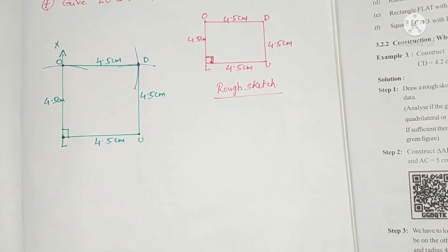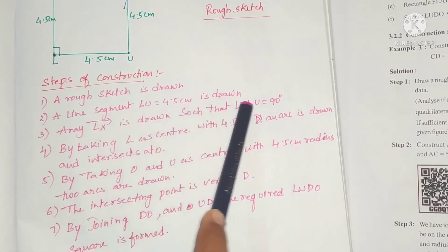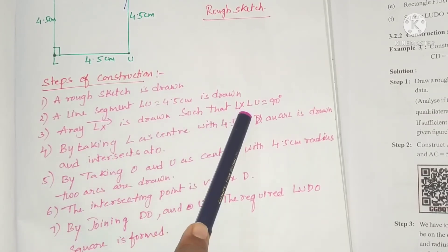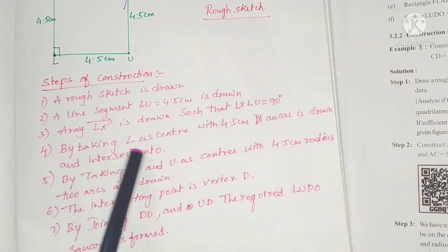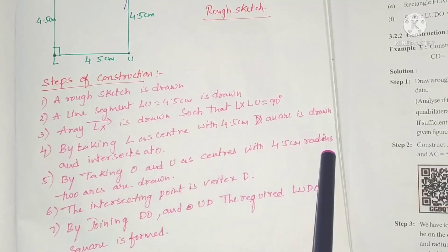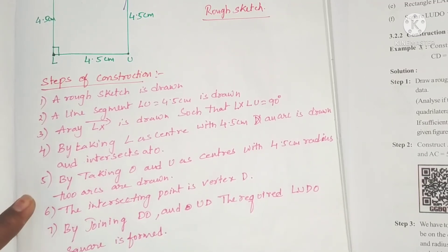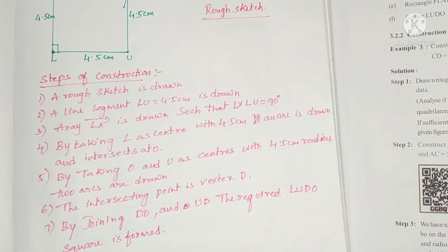Join all vertices to complete the required square LUDO — LUDO is also a famous game! Steps: a rough sketch is drawn; line segment LU equals 4.5 centimeters is drawn; ray LX is drawn such that angle XLU equals 90 degrees; with L as center and 4.5 centimeter radius an arc intersects at O; with O and U as centers, two arcs of 4.5 centimeter radius are drawn — their intersection is D; by joining DO and UD, square LUDO is formed.